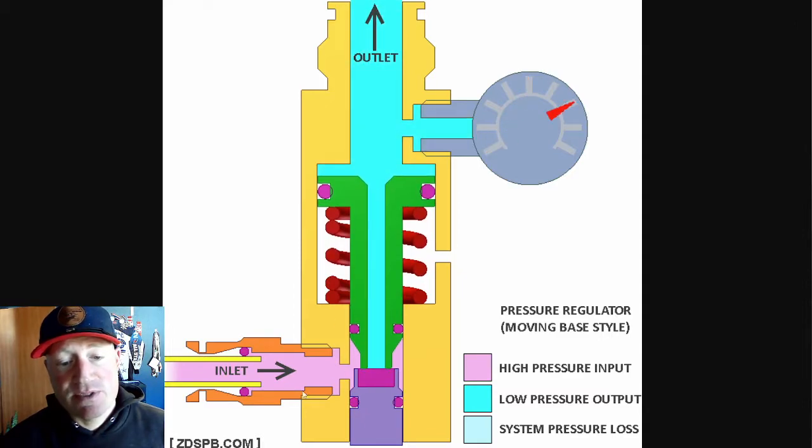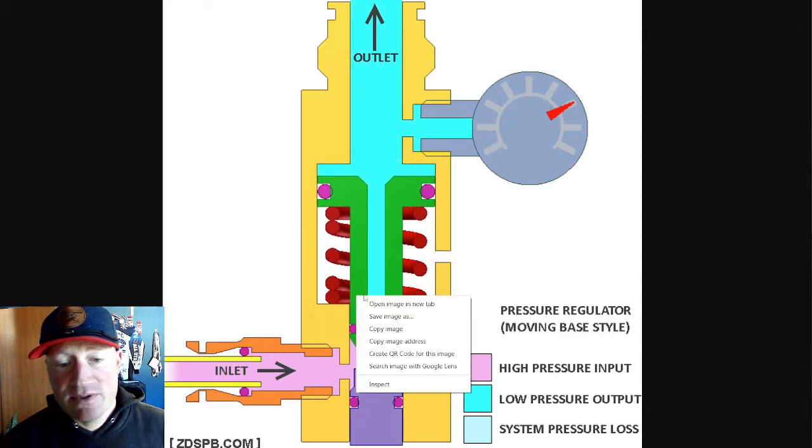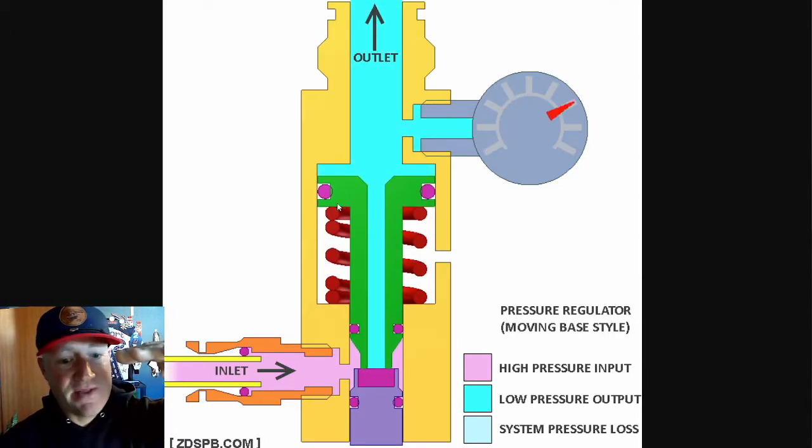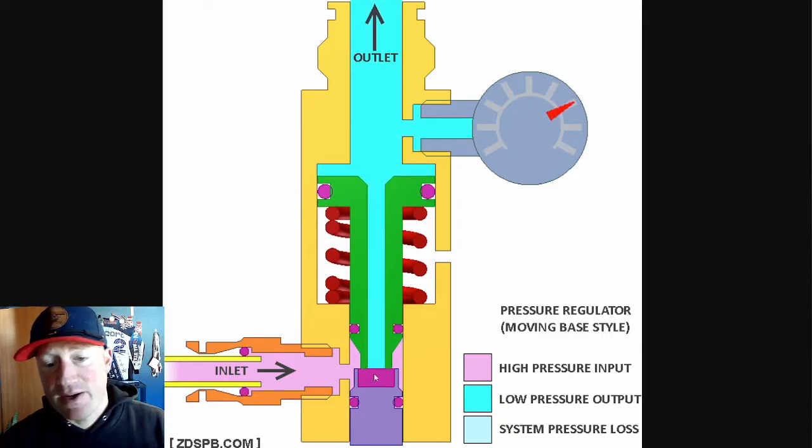So your piston, if there was no air in here, what's going to happen is these red coils here are actually a spring. The spring is pushing up against this piston, so it will be in that upper position. That would allow air to come right into this piston.